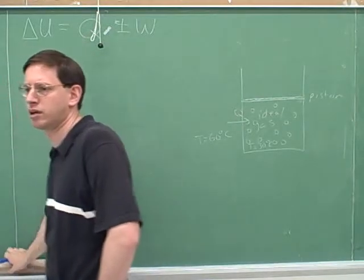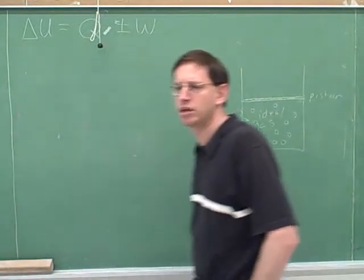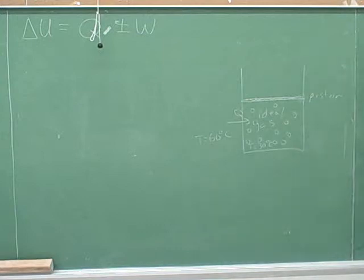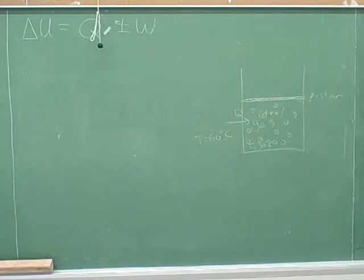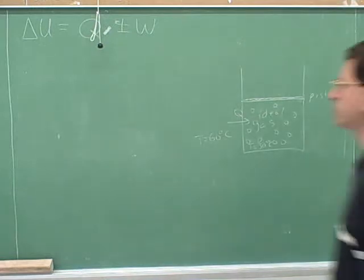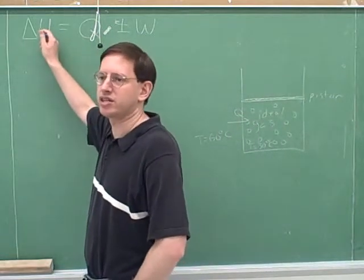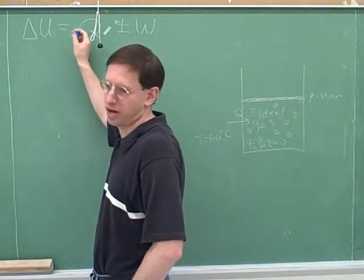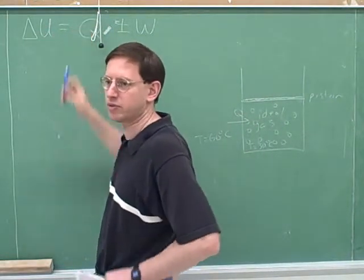What would be the units for Q? Remember that Q represents the energy that's transferred between things at different temperatures. Would it also be joules? It would also be joules because it's an energy transfer. This energy unit would be joules. It really has to be joules because it's in the same equation with delta U. If delta U is in joules, this equation is implying that Q is in joules.